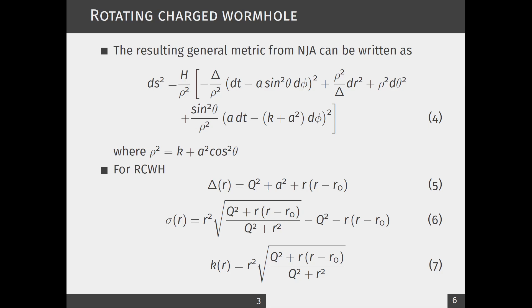When we take geodesic or equation of motion using Hamilton-Jacobi equation, this H will be eliminated which does not affect any of these equations. For our case, for our rotating charged wormholes spacetime, the Δ(r), Σ(r), and K(r) values are given as equations five, six, and seven.